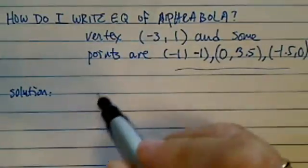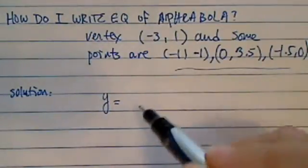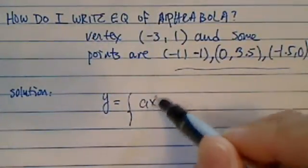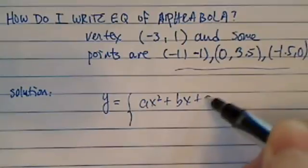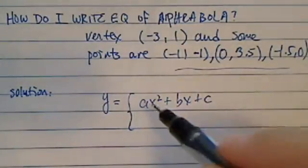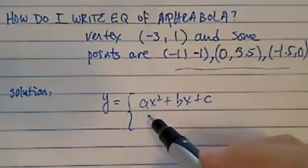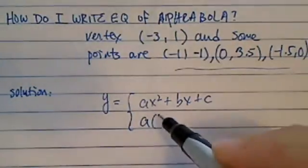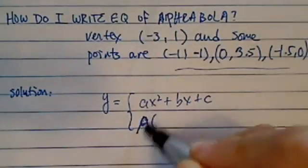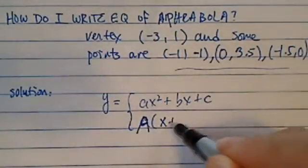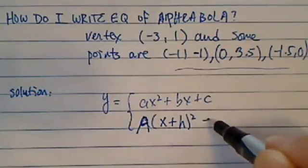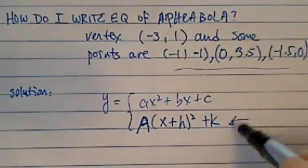What you need to know is basically a parabola can be expressed in two forms. It can be ax squared plus bx plus c, or it can be given in vertex form with a different coefficient. Let's call it big A, x plus h squared plus k. This one is the vertex form.